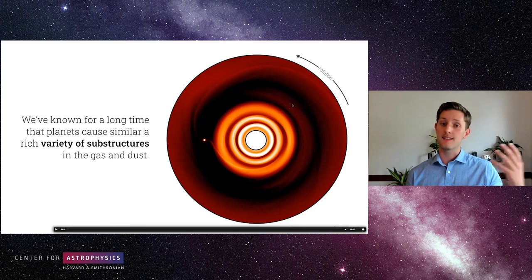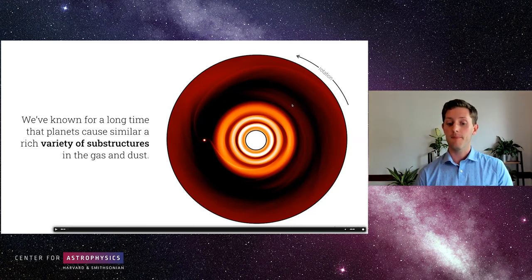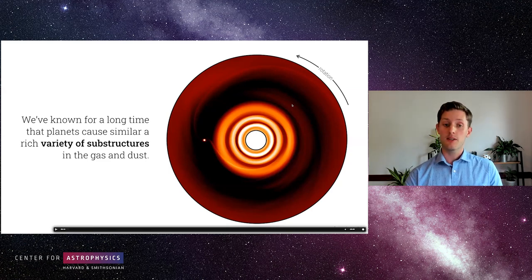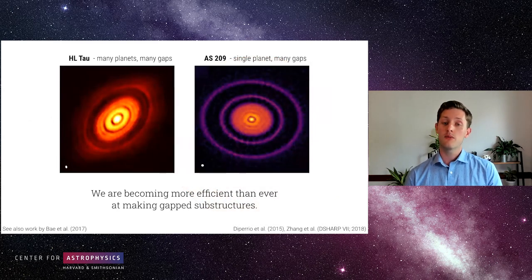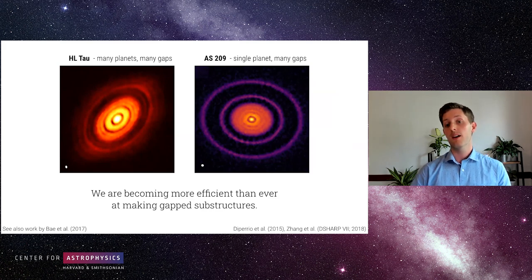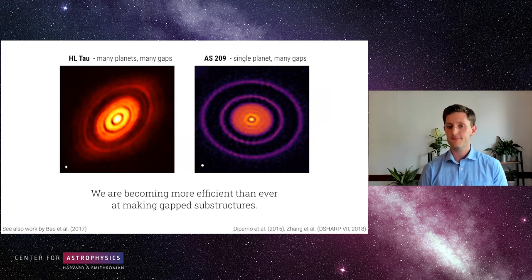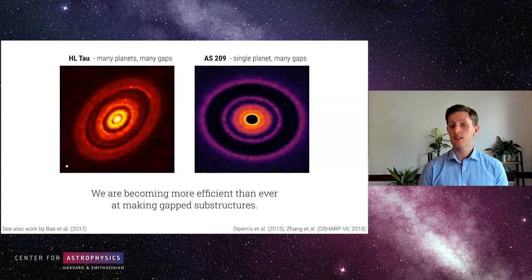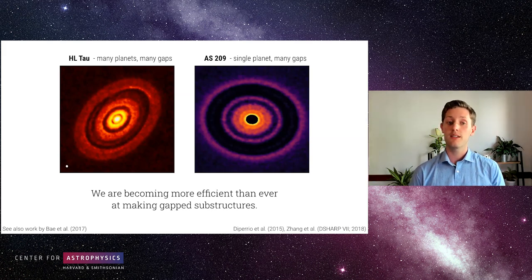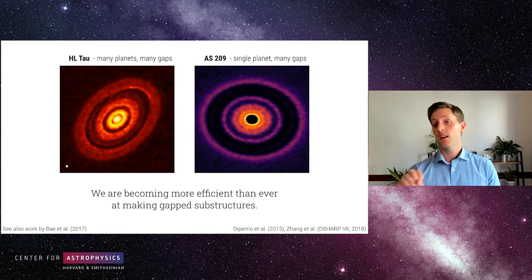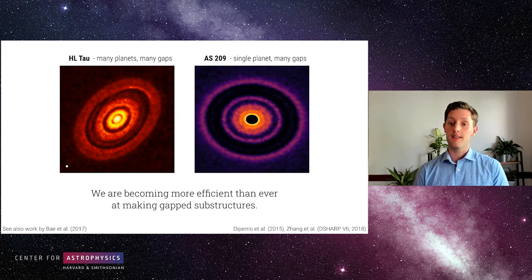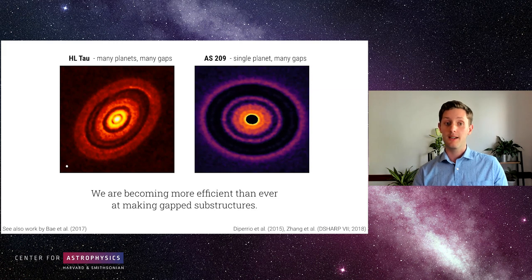This makes it very hard to look at these disks with all this wonderful structure and infer how many planets would need to be there. A really nice example of how tricky this is: comparing HLTau on the left — the first disk where we detected gaps and rings — and AS209 on the right, observed as part of the D-SHARP survey. Two different groups modeled these systems and matched the emission structure quite well. With HLTau, the authors used three different planets to create all the structures. Conversely with AS209, the authors reproduced all the structure with just a single planet, highlighting the degeneracy in inferring planets from gaps and rings alone.